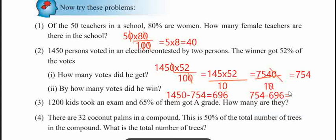The difference is 58. So 754 minus 696 is equal to 58. There are 58 votes difference between the two candidates.